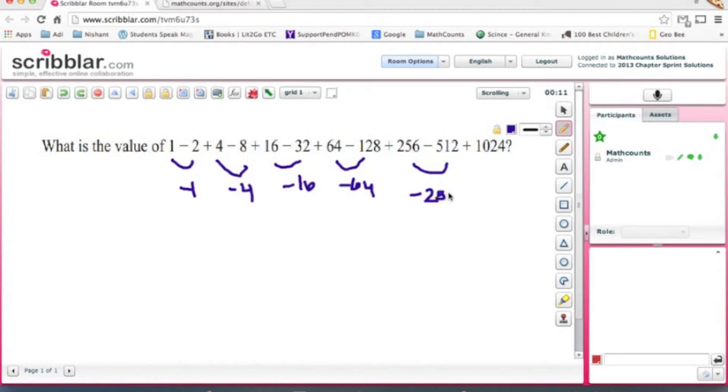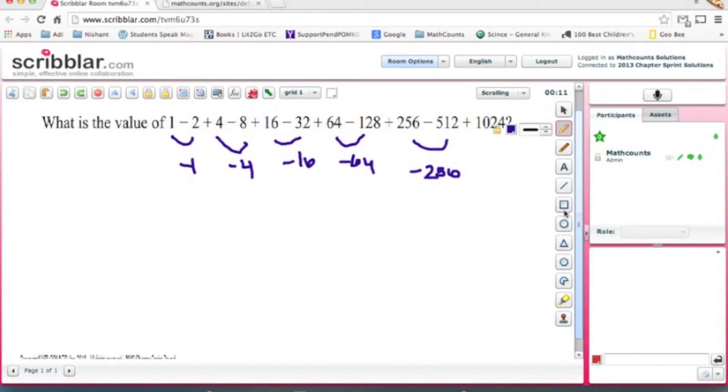Okay, so after that what we want to do is we want to keep this 1024 there. We're going to group again. Here's minus 5, minus 80, then we're going to bring these ones together.